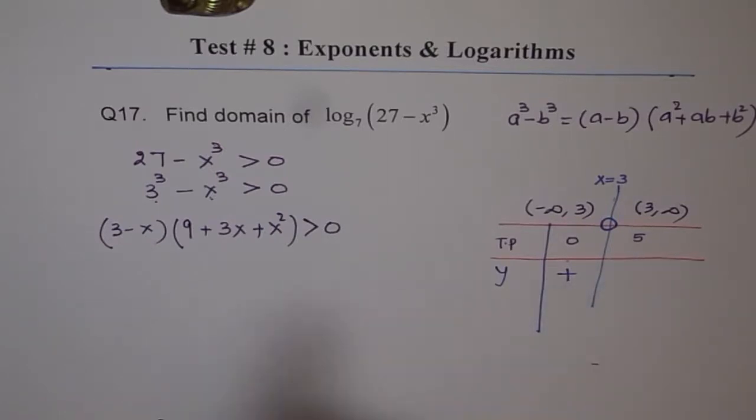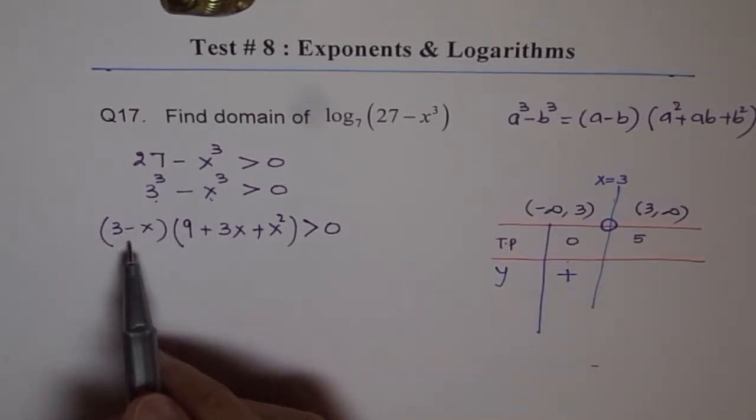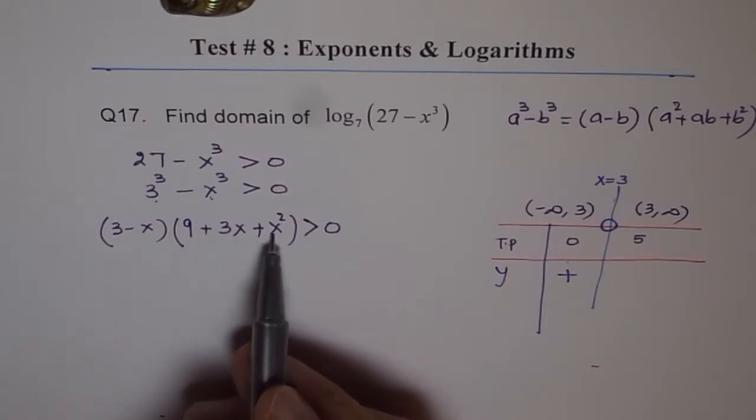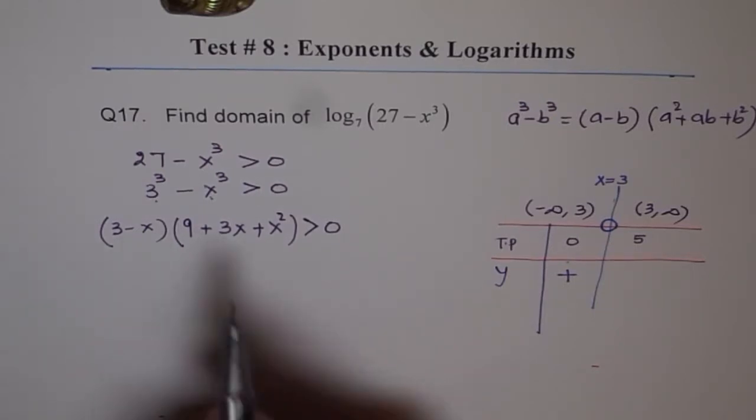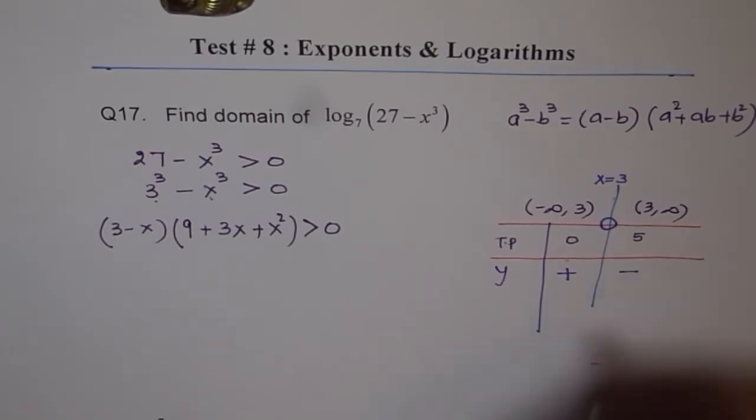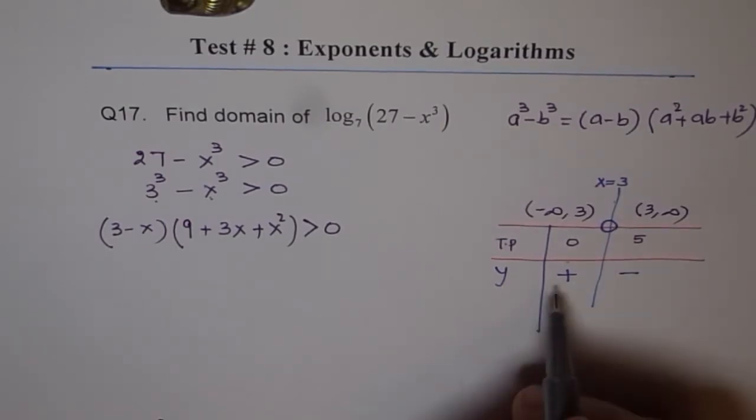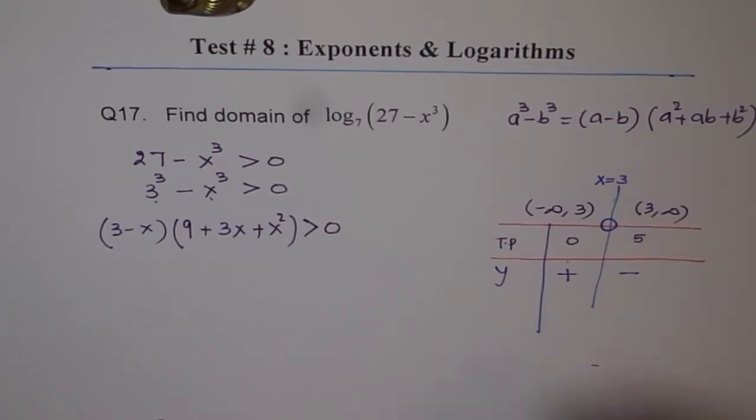Now, if I put 5 here, then 3 minus 5 is minus 2 and this is positive. Minus into positive will give me negative quantity. So I get negative here. Therefore, we get a result which is the answer is between this.